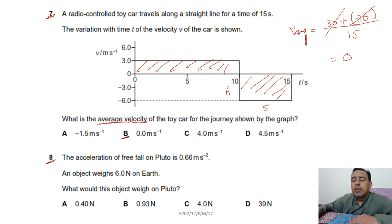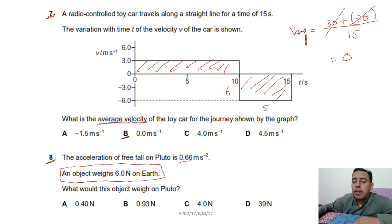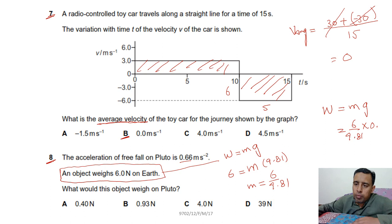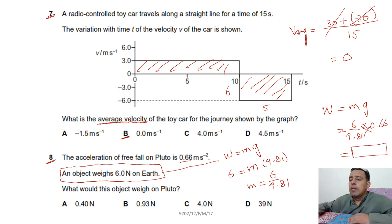Question 8: the acceleration of free fall on Pluto is given. An object weighs 6 N on Earth. Mass is the same everywhere: W = mg, so m = 6 / 9.81. Weight on Pluto = m × g_Pluto = (6/9.81) × 0.66. Substituting gives 0.40 N. Option A is correct.